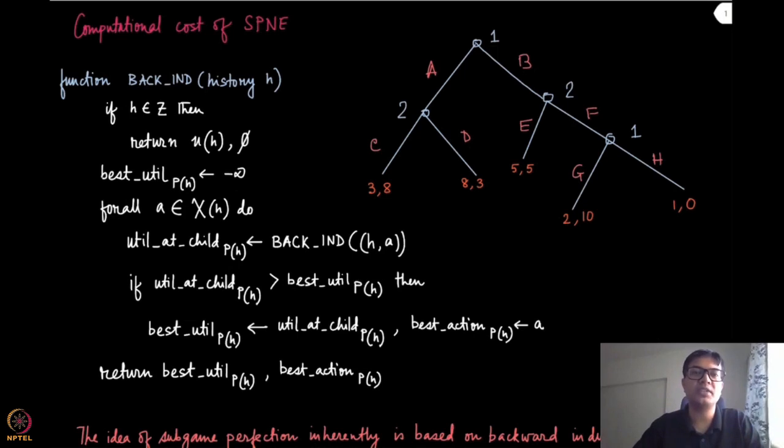So let us look at what is the complexity for finding a subgame perfect Nash equilibrium. So here is the same game from the previous module and also the algorithm, the backward induction algorithm that finds a subgame perfect Nash equilibrium for any PI-EFG.